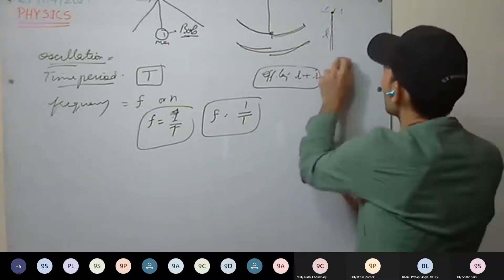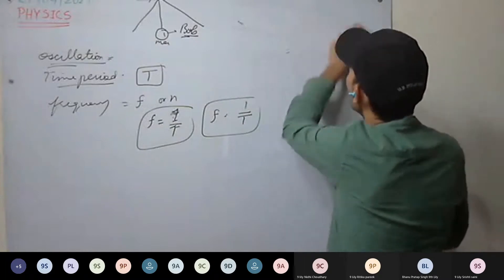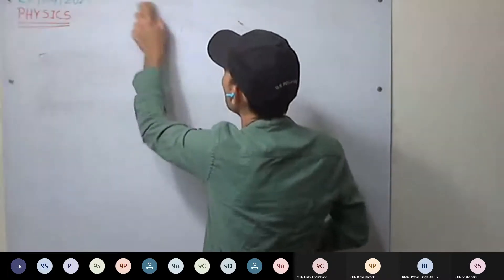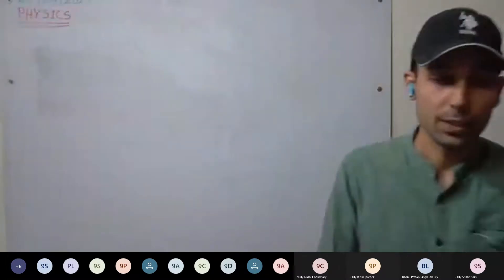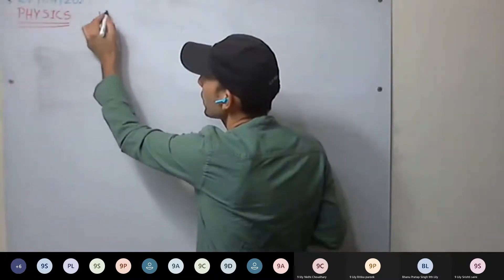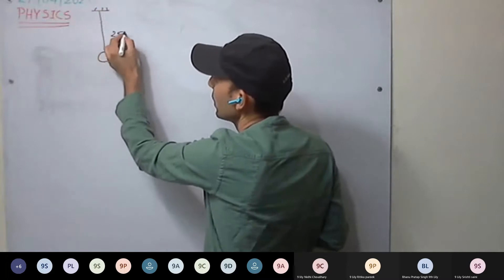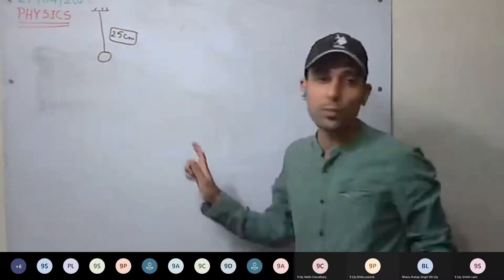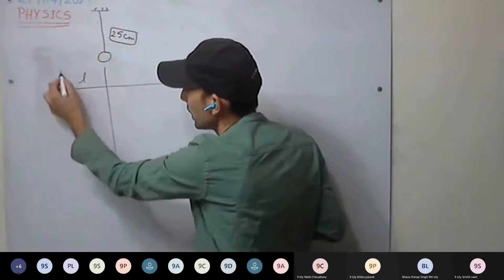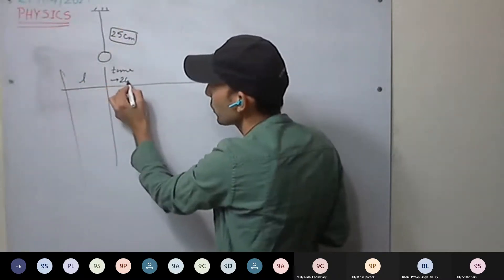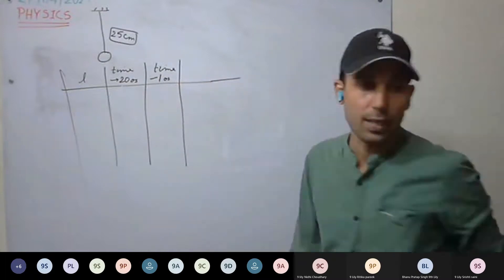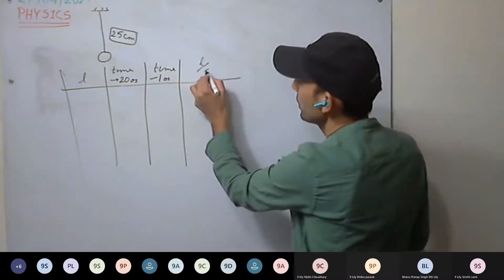Then we discussed measurement of time. In this experiment, what we did: we took a pendulum of a particular length, noted the time taken to complete 20 oscillations, then calculated the time for one oscillation, and after that we calculated the L upon T² ratio.